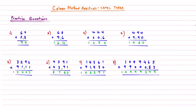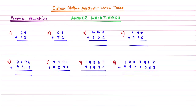So here is the full answer walkthrough for the practice questions. Remember, we're starting from the right-hand side. So 9 and 8 gives me an answer of 17 — I'll carry my 1 there and have a 7 underneath. Then move on to the next column: 6 plus 2 is 8, add the 1, gives me an answer of 9.